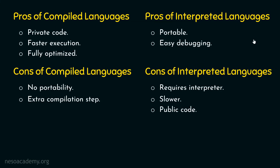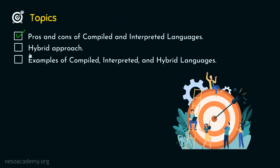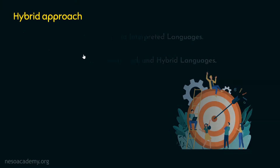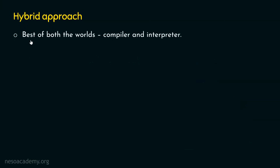Now we know all the pros and cons of compiled and interpreted languages. We are ready to dive into our second topic: hybrid approach. This approach is different from compiled and interpreted approaches. It combines both worlds and involves the best of both compiler and interpreter, taking advantages from both.